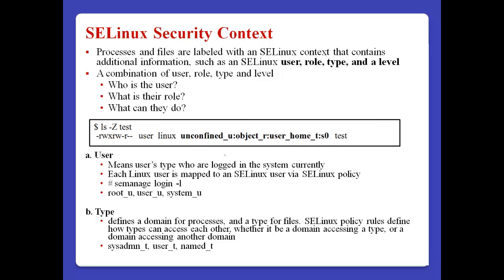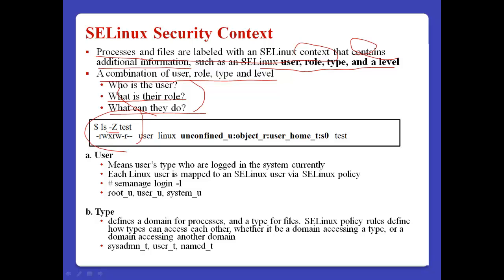SELinux security context. If we use SELinux, processes and files are labeled with an SELinux context. This context contains additional information about the file or directory, including SELinux user, role, type, and level. The SELinux context is a combination of user, role, type, and level — defining who the user is for these resources, what their role is, and what they can do. To see the SELinux security context, use the -Z option. For example: unconfined_u is the user, object_r is the role, user_home_t is the type, and s0 is the level.